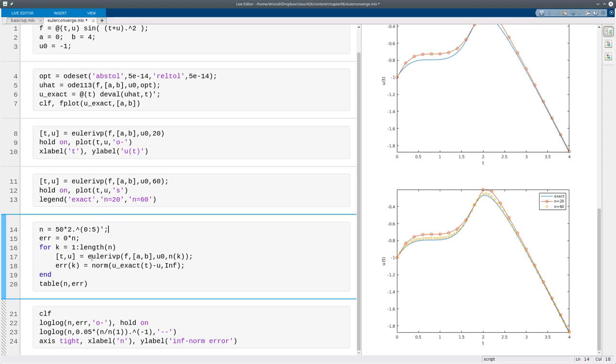For each of those values of n, I'll call the Euler method. And then I'll keep track of the error. I'm taking the max norm error, so the difference between the exact solution at the t values and the solution values that I got there.